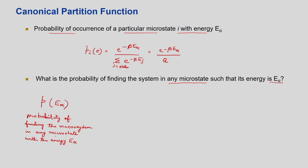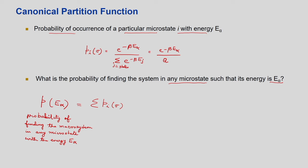The probability P(eα) of finding the macroscopic system in any microstate with energy eα is the sum of probabilities of all microstates having that energy. Suppose there are 10 microstates each with energy eα; the probability of each is 1/5, and you add them all up. So this sum runs over all states i whose energy is eα.